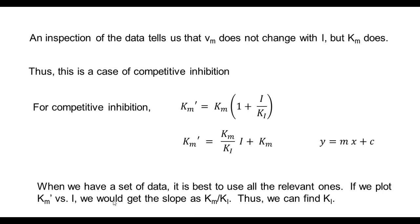If we plotted that way, then we could get Km over Ki from here and Km from the intercept. This is what we just mentioned. When we have a set of data, it is best to use all the relevant ones. If we plot Km dash versus I, we would get the slope as Km by Ki, and thus we could find Ki.